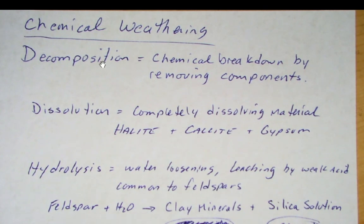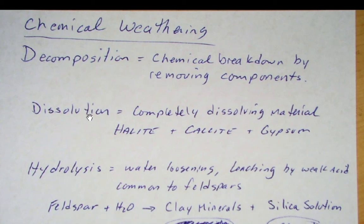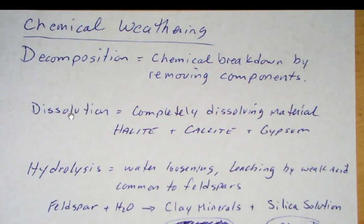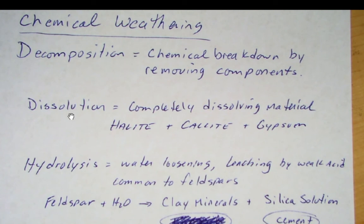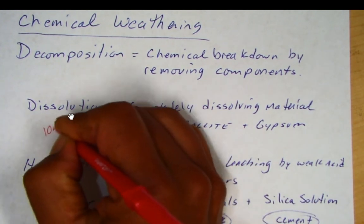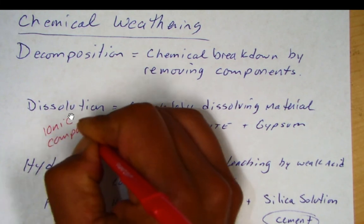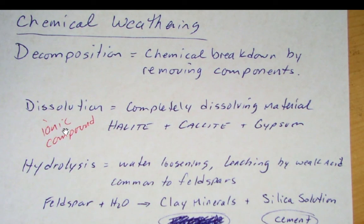For chemical weathering, we have decomposition — a chemical breakdown by removing components. You're either completely dissolving the material or removing some components and leaving others, changing the mineral over time. Dissolution is a type of chemical weathering where you completely dissolve the material. The easier materials to dissolve are ionic compounds, which have relatively weak bonds. Halite, calcite, and gypsum are good examples. If you look at the composition of seawater there's sulfate ion, carbonate ion, sodium, and chloride — these are compounds dissolved in water.